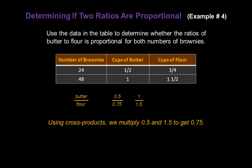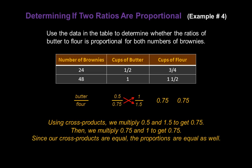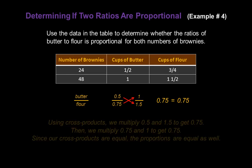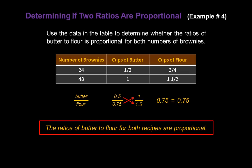Using cross products, we multiply 0.5 and 1.5, which gives us 0.75. Then we multiply 0.75 and 1, which also gives us 0.75. Since our cross products are equal, the proportions are equal as well. The ratios of butter to flour for both recipes are proportional.